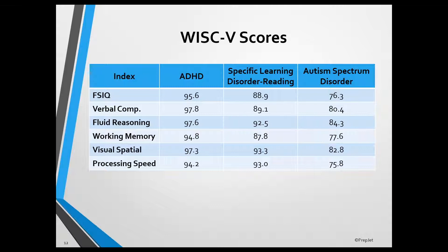For example, children and adolescents with Autism Spectrum Disorder obtain the highest average score on Fluid Reasoning and the lowest average score on Processing Speed. You don't have to memorize the actual scores, just the index names for the highest and lowest scores.